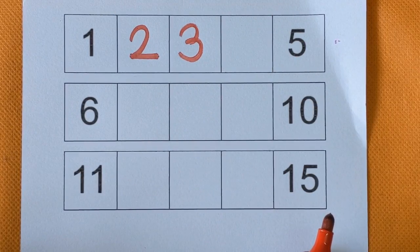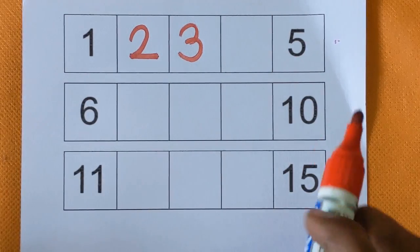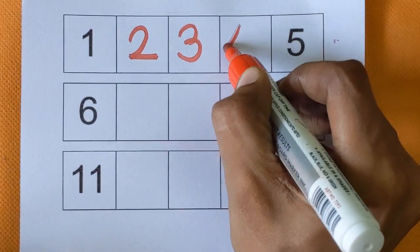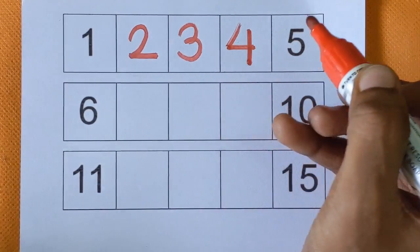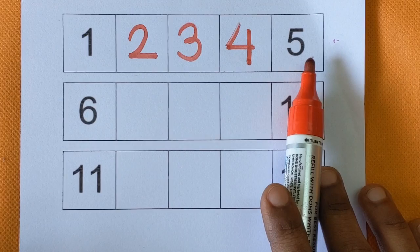After number 3, next, which number is missing here? It's a number 4. Number 4. This is number 5.